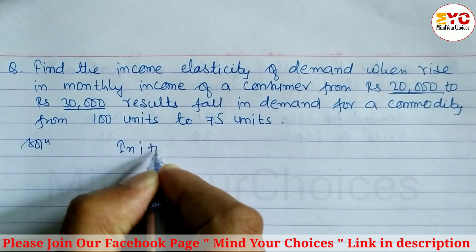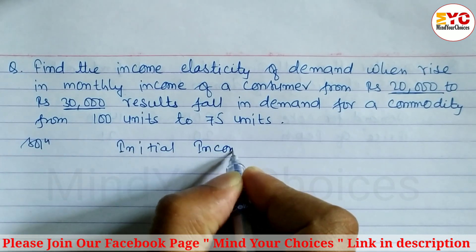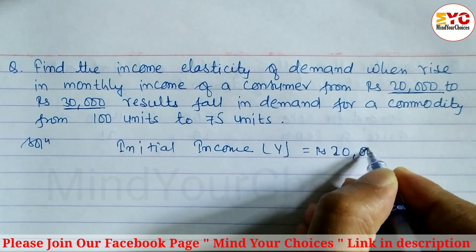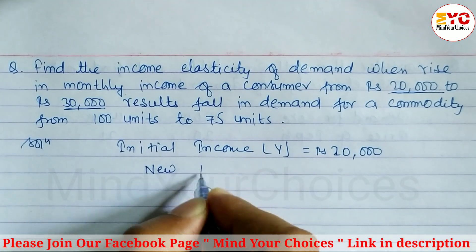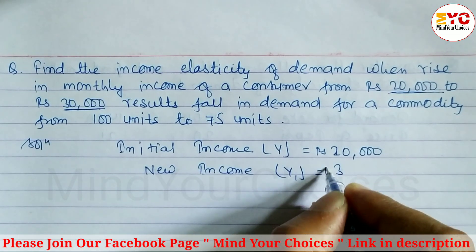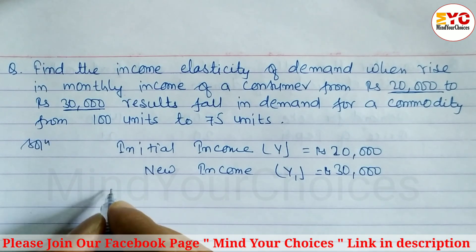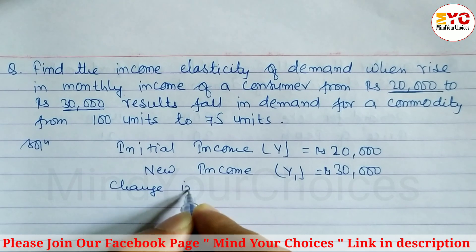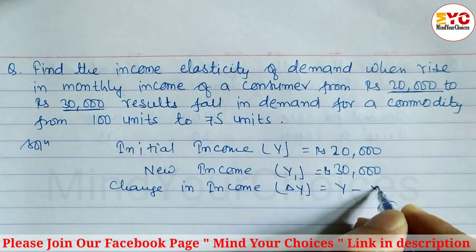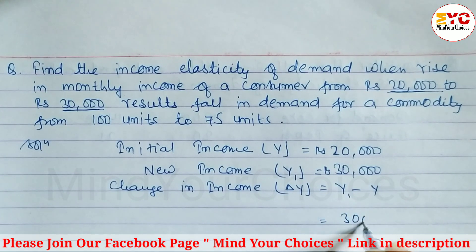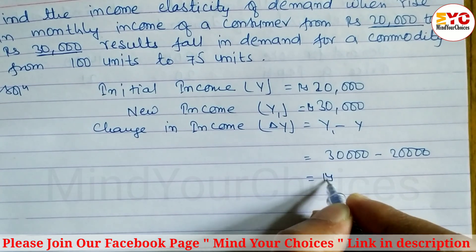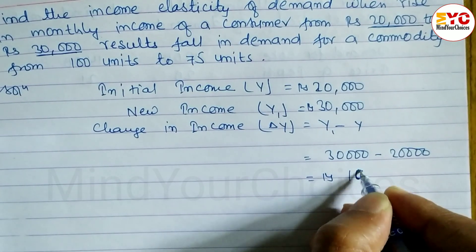The initial income, denoted by Y, is equal to 20,000 rupees. The new income, denoted by Y1, is equal to 30,000 rupees. The change in income, denoted by ΔY, equals Y1 minus Y, which is 30,000 minus 20,000. So the change in income is equal to 10,000 rupees.